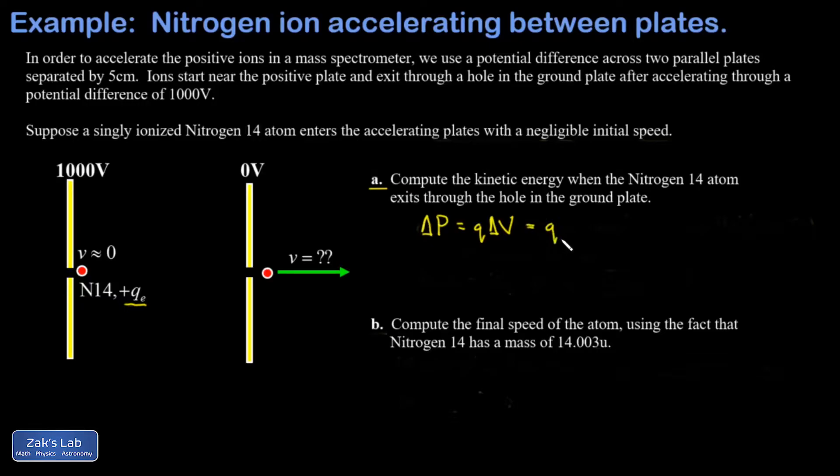Our charge here is plus one elementary charge, and our change in potential, that's final minus initial, is going to be zero minus a thousand, negative one thousand volts. We plug in the value of the elementary charge, that's 1.6 times 10 to the negative 19 coulombs.